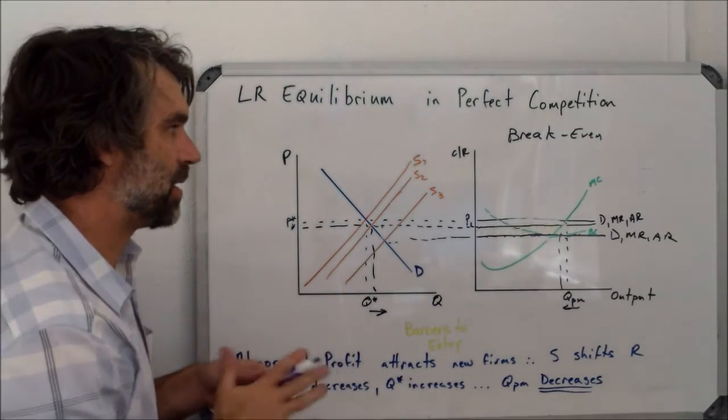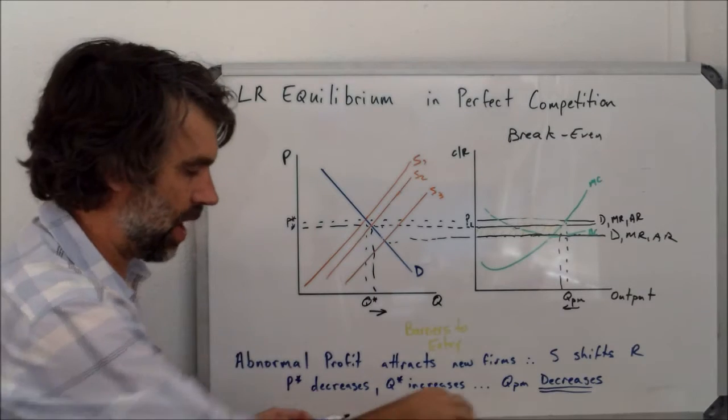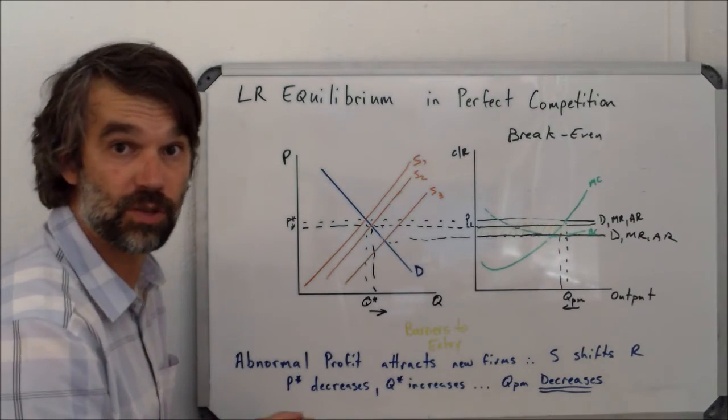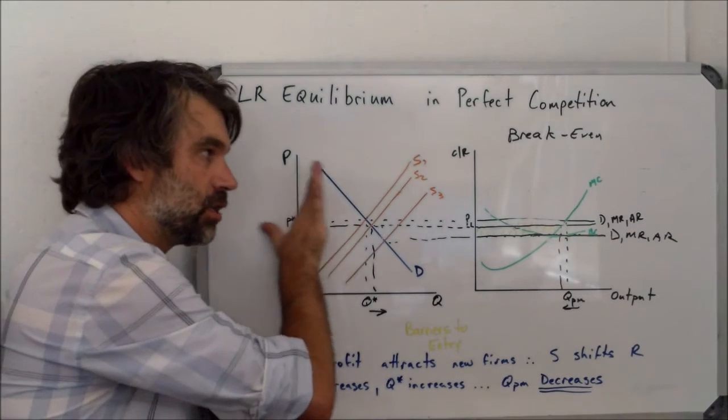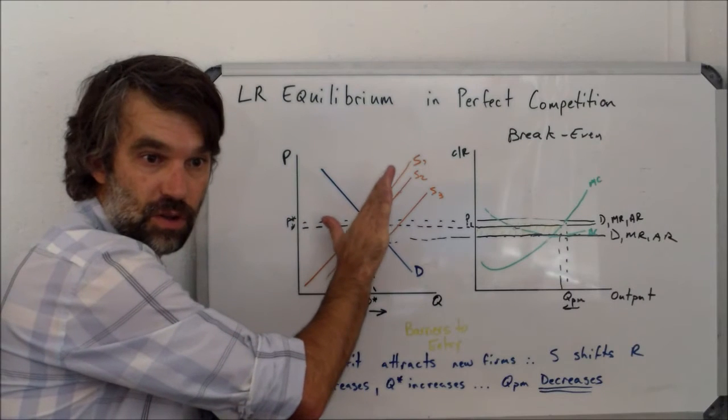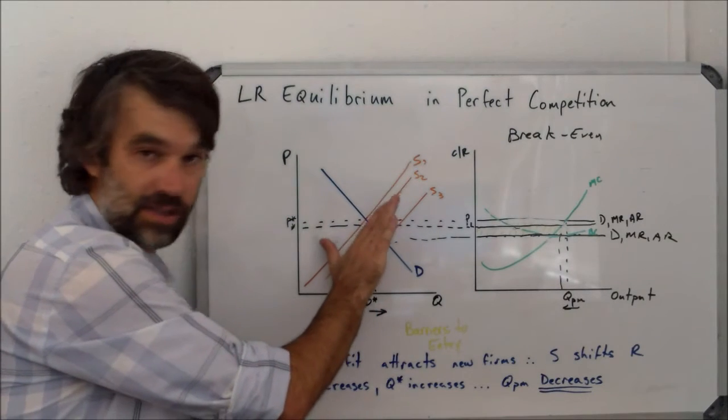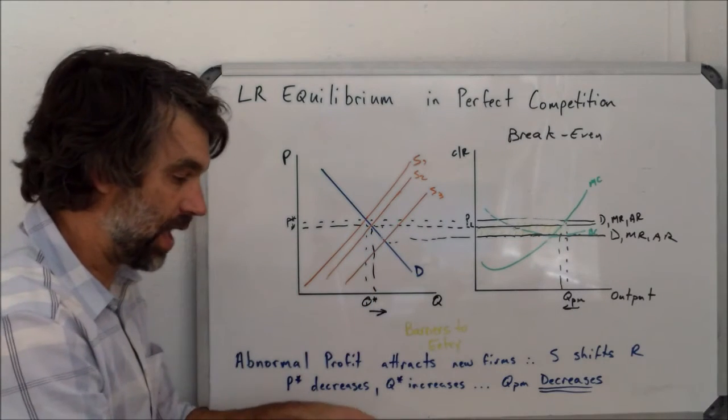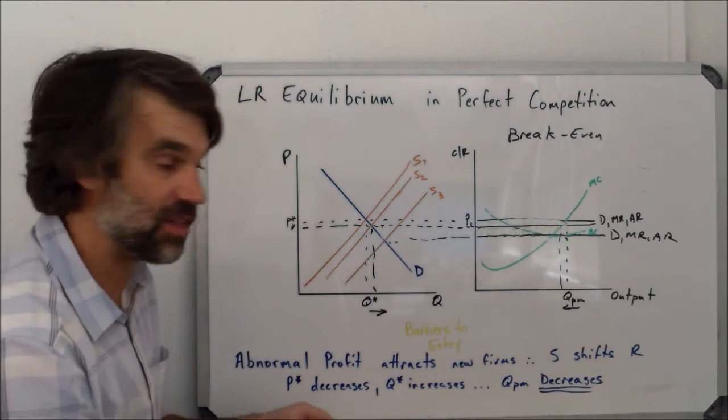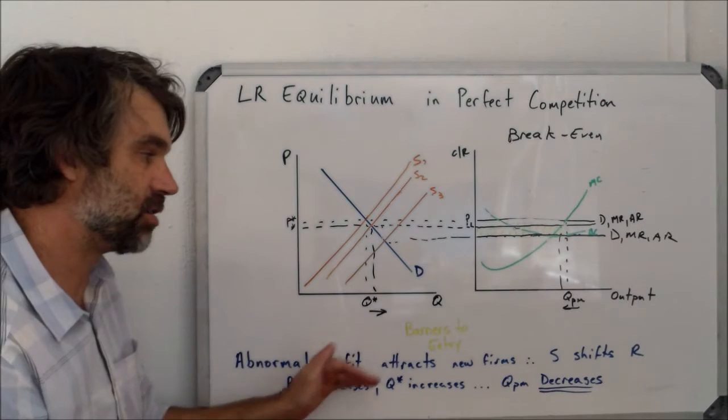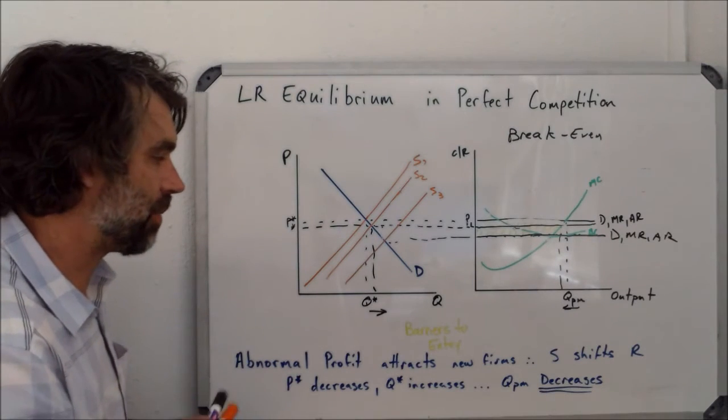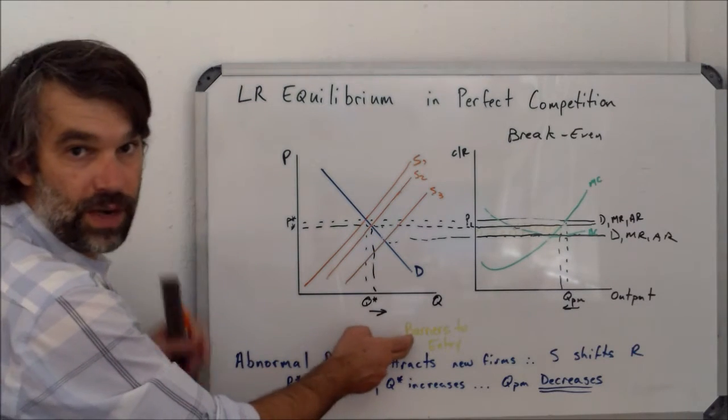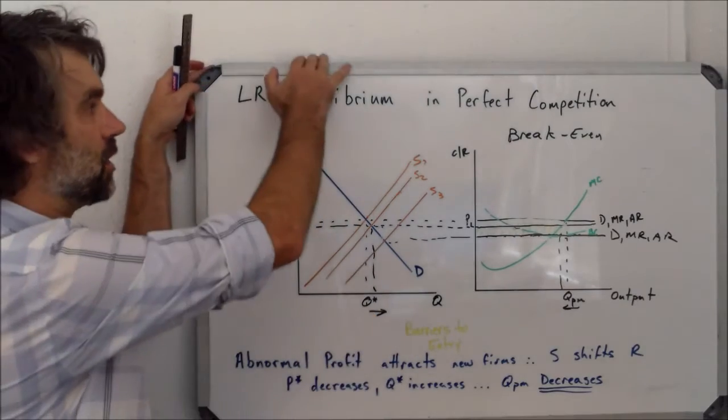So to recap, what's happened is that because of the abnormal profit, more and more firms are attracted to the industry, shifting the supply curve further and further to the right. And as long as there's abnormal profit, that will continue to happen. Now that goes away once there's no more abnormal profit, there's no reason for new firms to be attracted to the industry. Keep in mind this is possible because of the low barriers to entry in perfect competition.